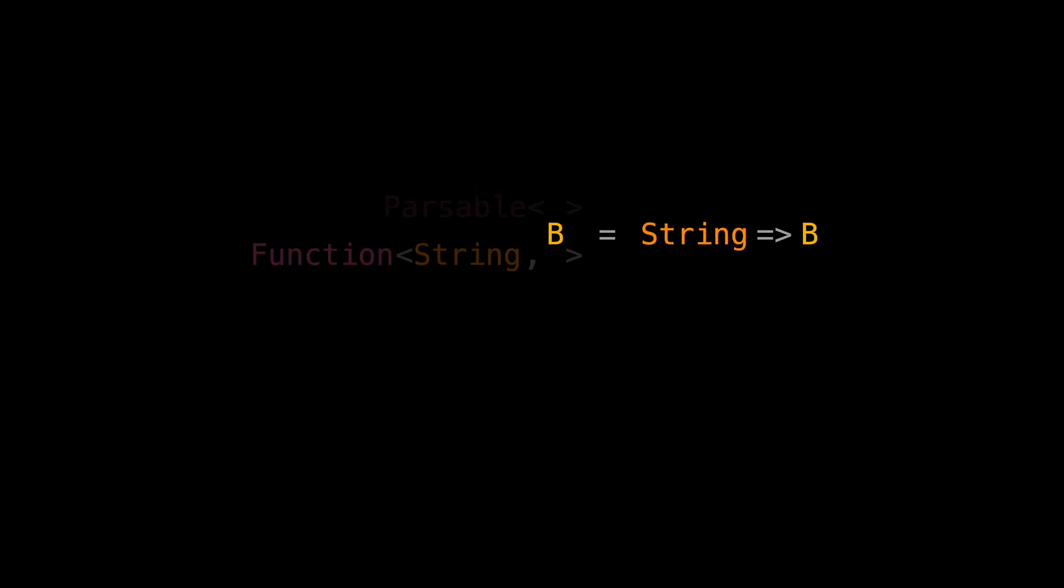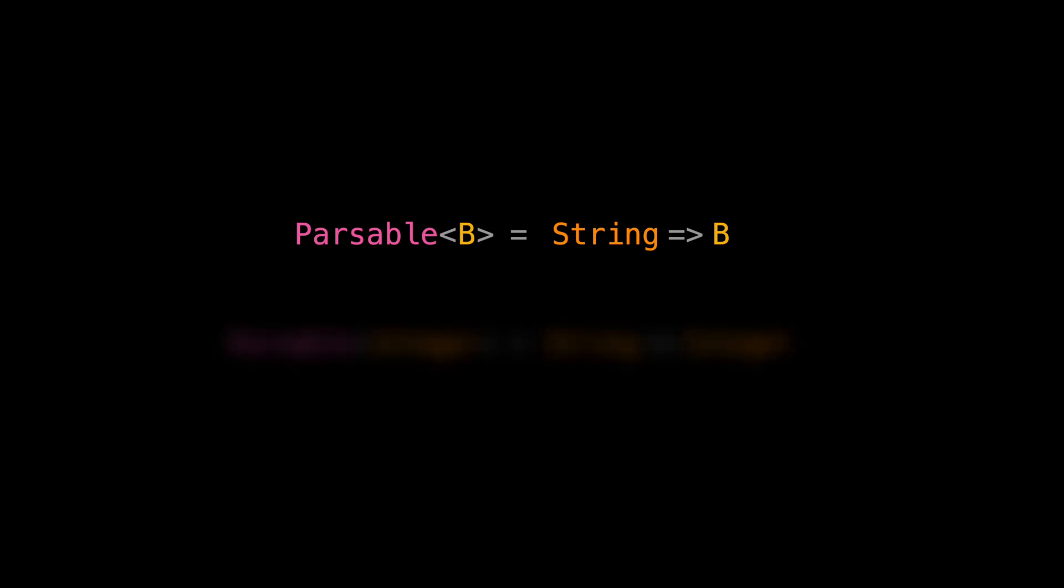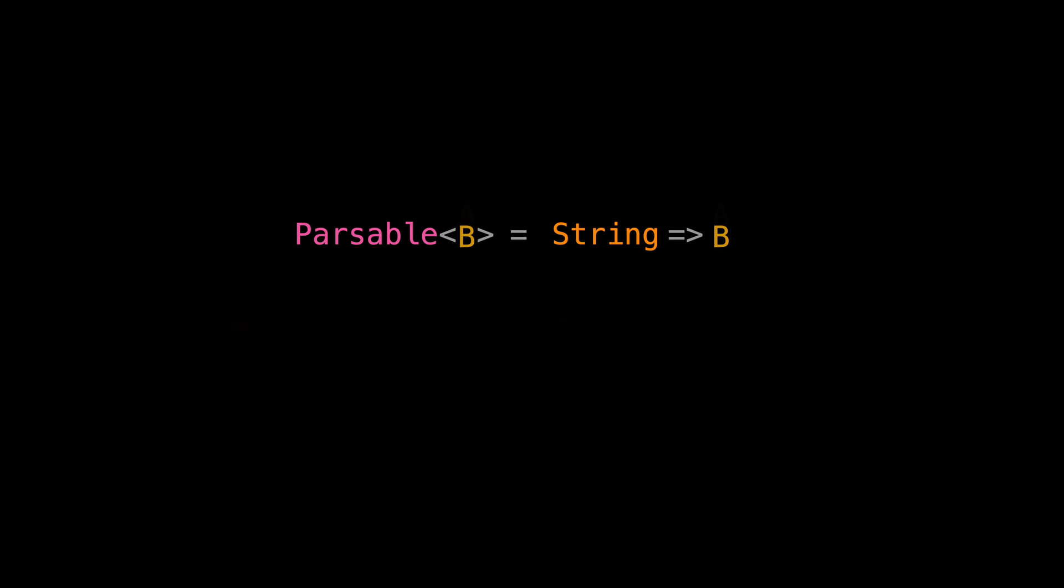Let's imagine a type constructor, Parsable, which is a function type that receives a string, parses it and returns type B. An example for Parsable instance can be Parsable Integer which represents converting a string to an integer. For making things easier to explain let's rename B to A. So is Parsable a structure functor?